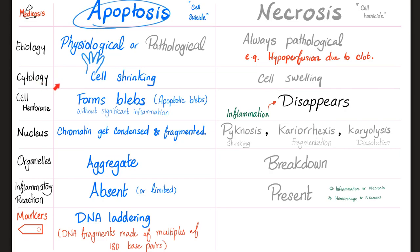What happens to the cell during apoptosis? It shrinks. How about during necrosis? It swells. The cell membrane forms blebs — we call them apoptotic blebs — without significant inflammation. However, in necrosis, you have lots of inflammation until your cell membrane gets destroyed and disappears, like the Thanos meme.